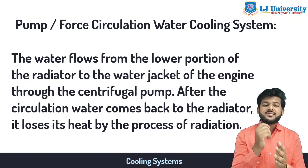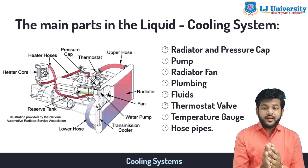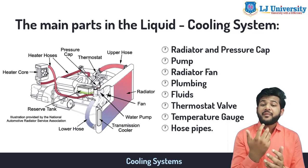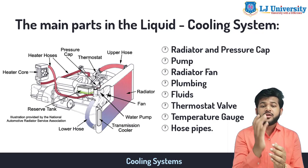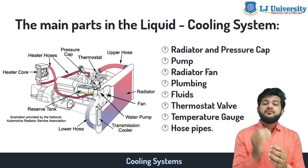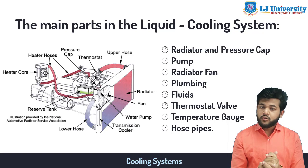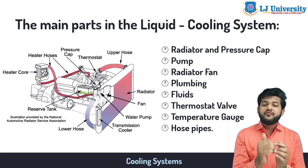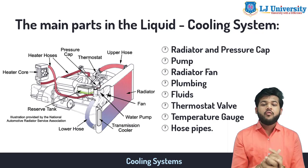The main parts of the cooling system are: radiator, pump, radiator fan, plumbing, fluids, thermostat valve, temperature gauge, and hose pipe. In the next session, we will discuss all these parts in detail. To summarize, there are basically two types of cooling systems — air cooling and water cooling — and we have discussed the different types of water cooling systems as well.